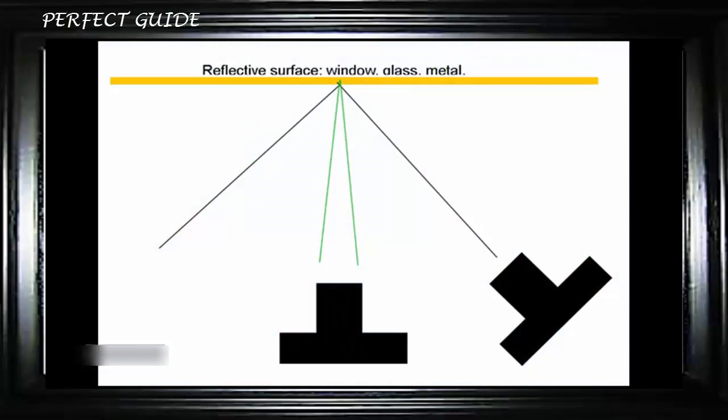The answer to this problem is to move left or right. As you can see in this diagram, moving the camera to the right means the light coming out of the flash hitting the glass will cast off in a different direction, moving that hot spot out of view of the camera.